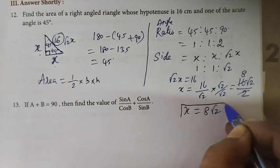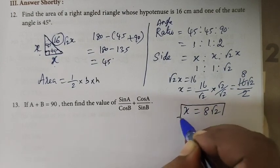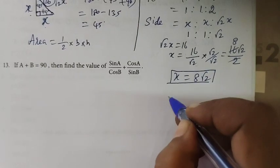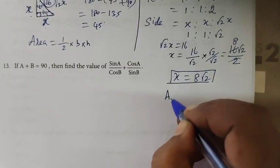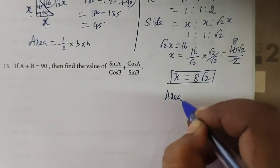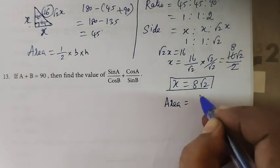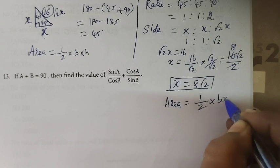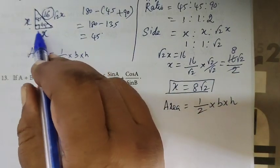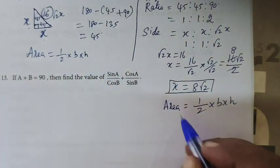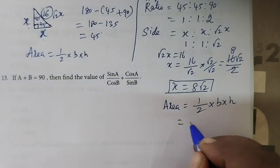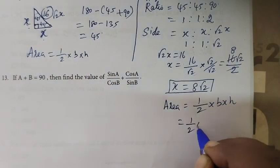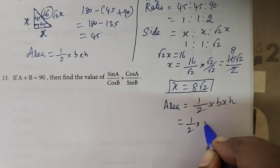Now you can find the area. The formula is area equals half into base into height. Therefore, area equals half into x into x.